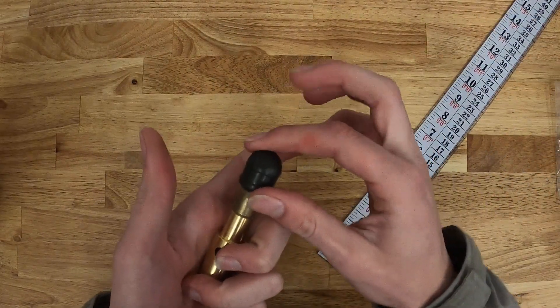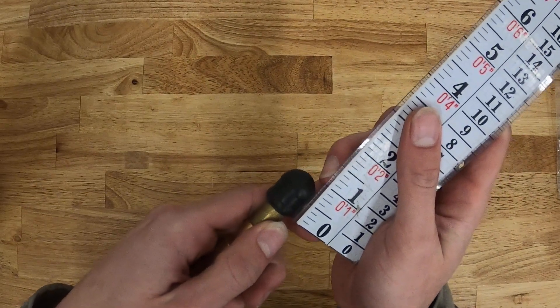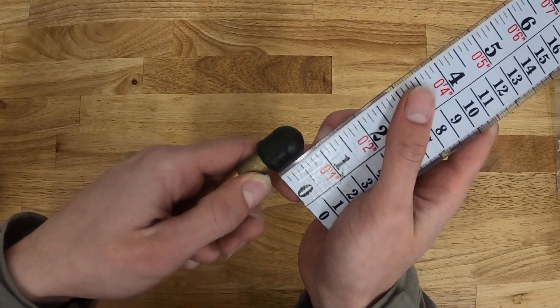And then we can measure the plunger assembly. This rubber piece here, from the bottom to the tip, measures right at one inch.